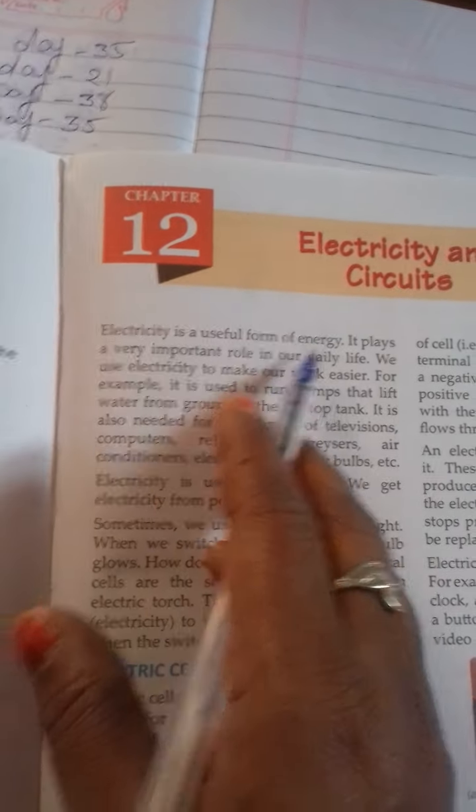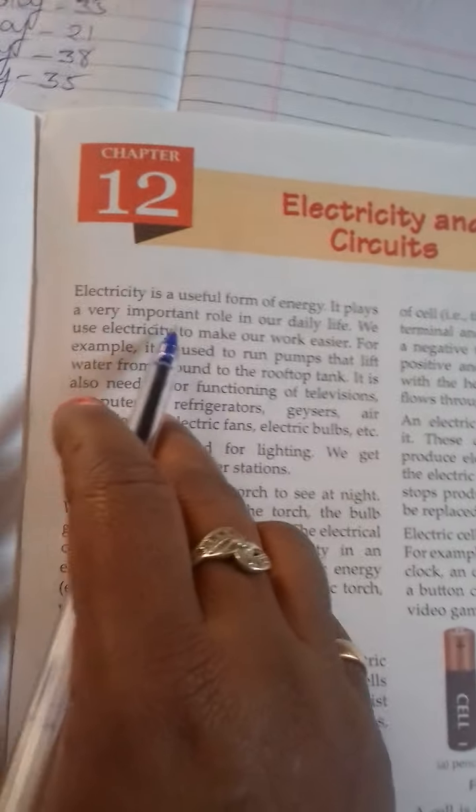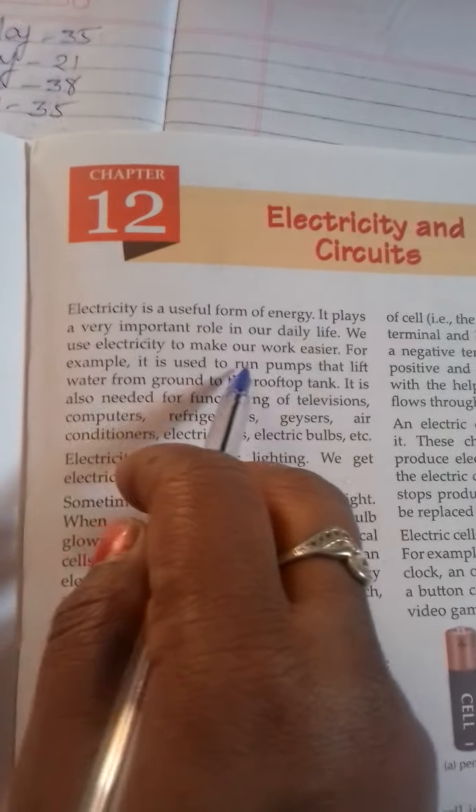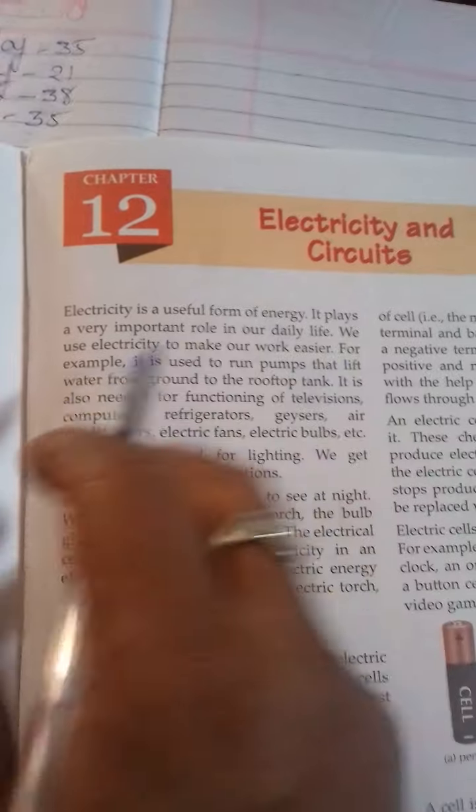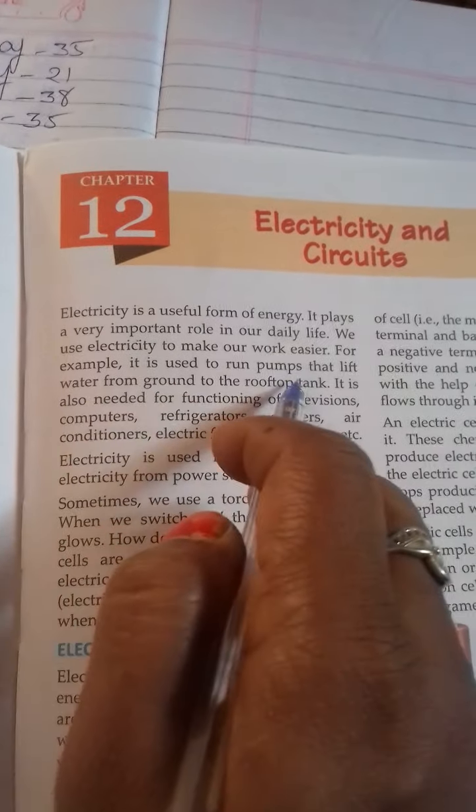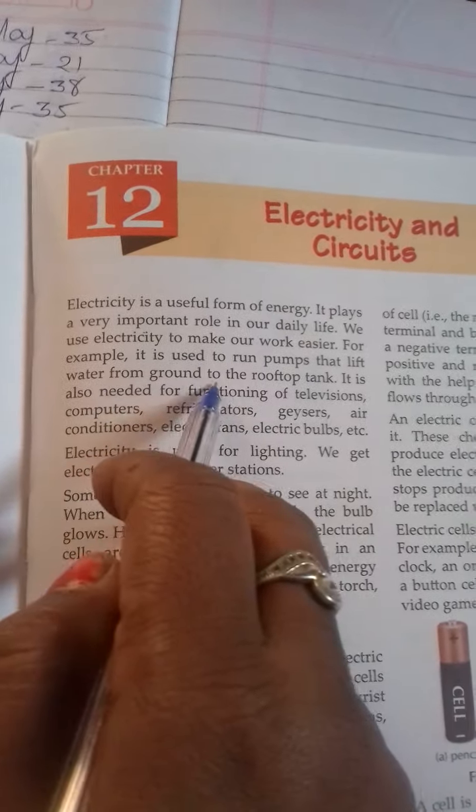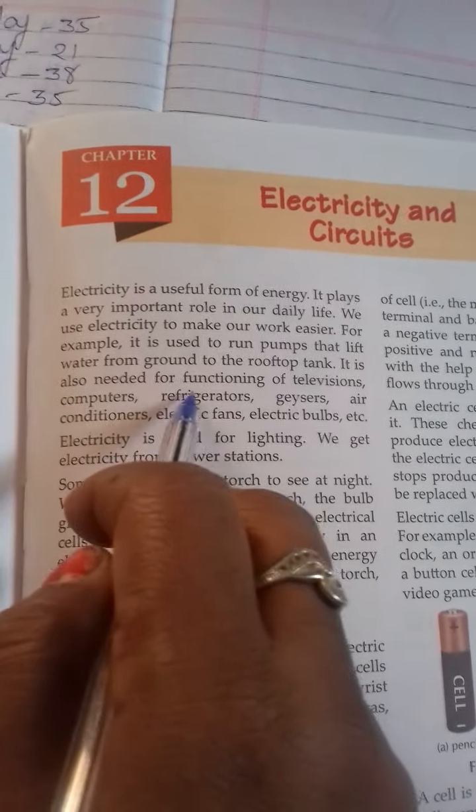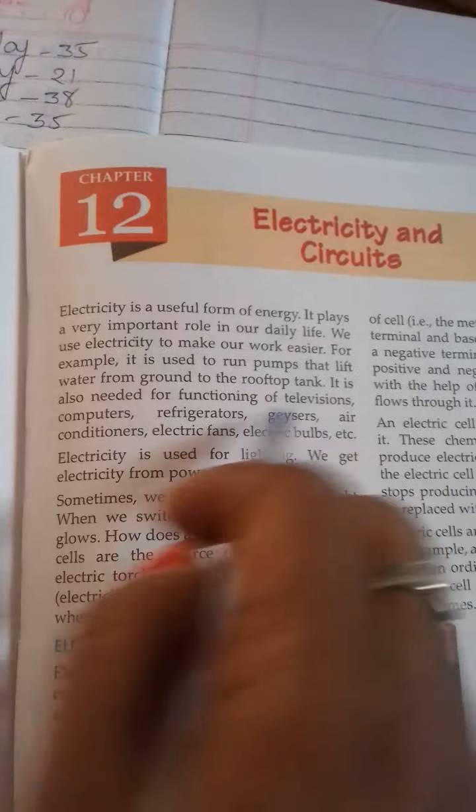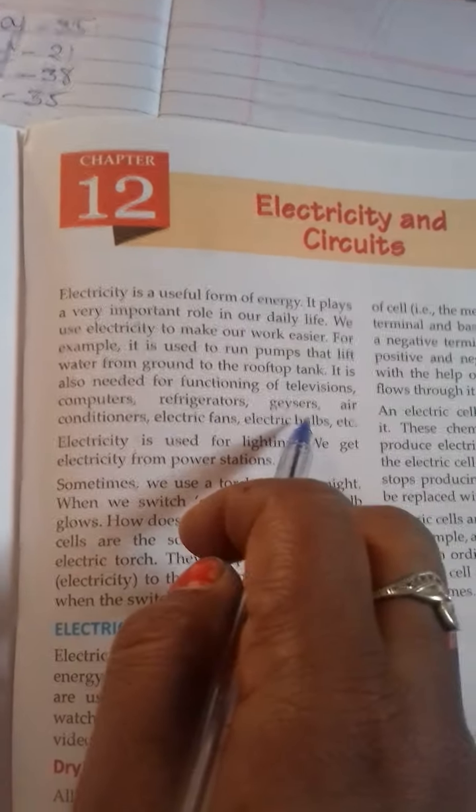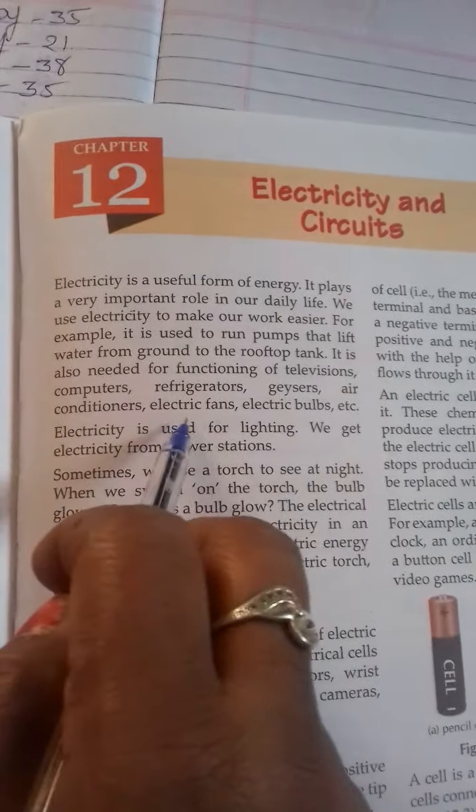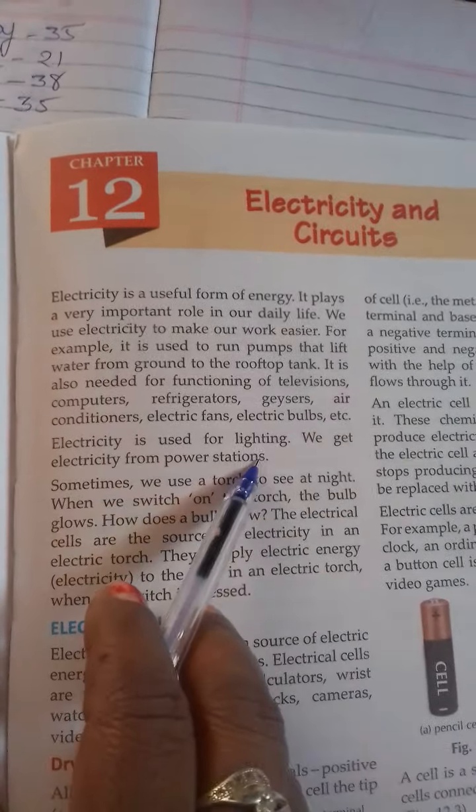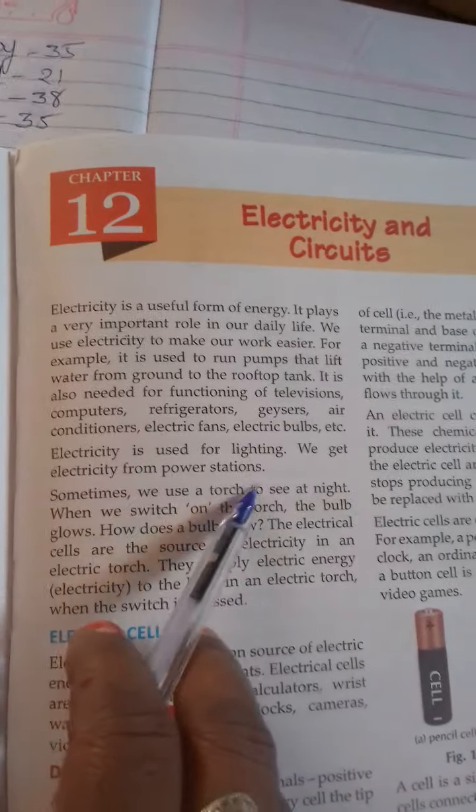Electricity is a useful form of energy. It plays a very important role in our daily life. We use electricity to make our work easier. For example, it is used to run pumps that lift water from ground to rooftop tank. It is also needed for functioning of televisions, computers, refrigerators, air conditioners, electric fans, electric stoves, etc. Electricity is used for lighting. We get electricity from power stations.